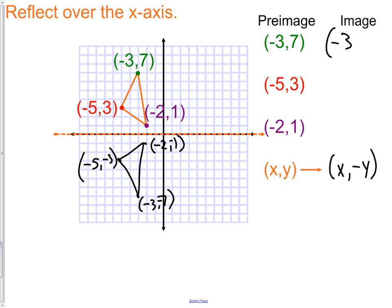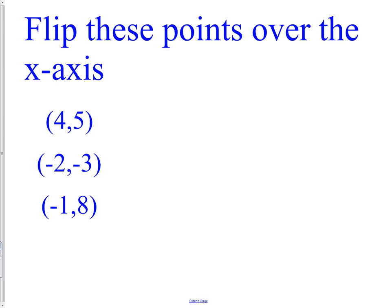Remember, when we're reflecting over the x-axis, the x-coordinate part of the coordinate does not change, but the y changes. And there you go. Just like the y-axis, with the x-axis, we really don't need the picture. All we need to remember is that when we flip over the x-axis, the x part of the coordinate doesn't change.